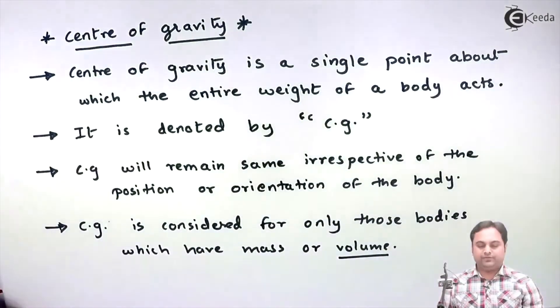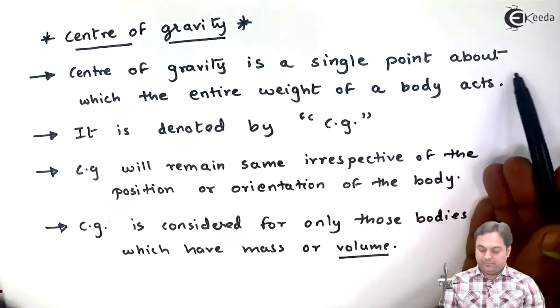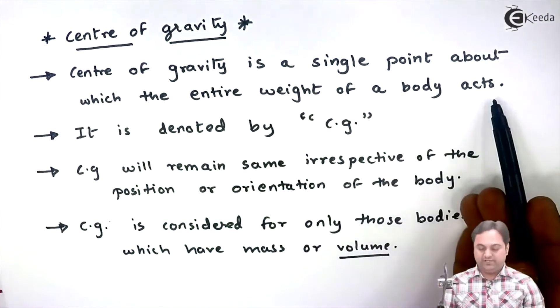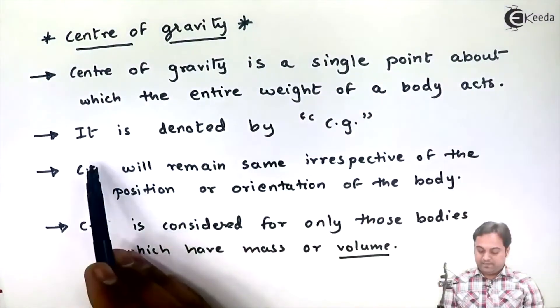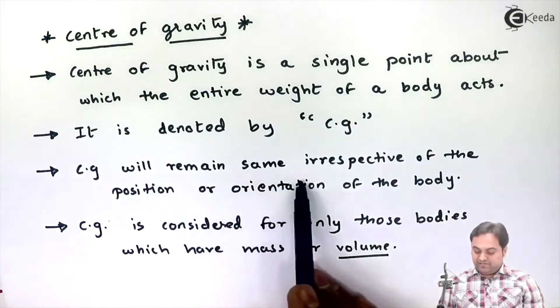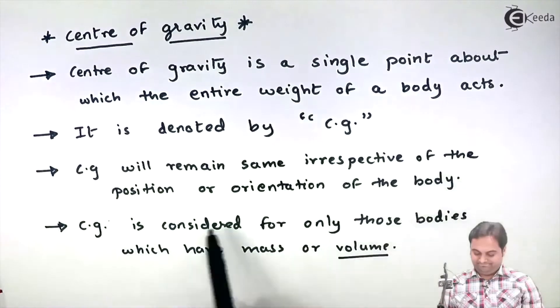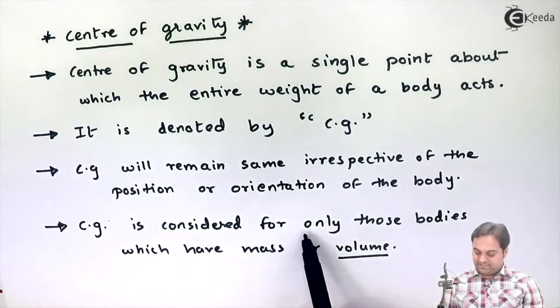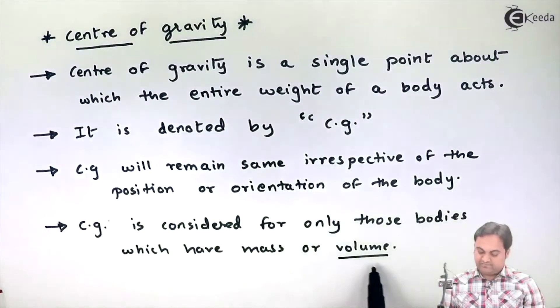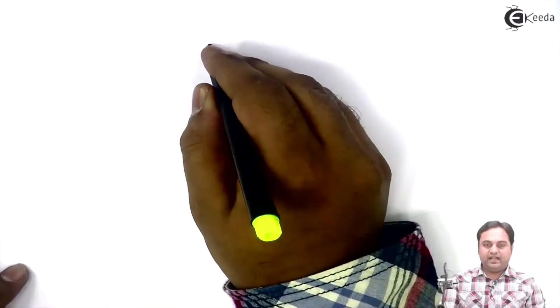To summarize: center of gravity is a single point about which the entire weight of a body acts, denoted by CG. CG remains the same irrespective of the position or orientation of the body, and it is considered only for bodies which have mass or volume.